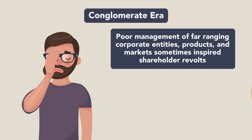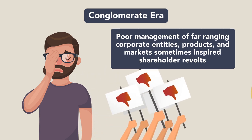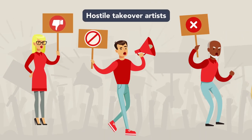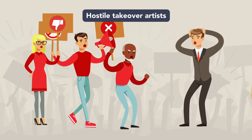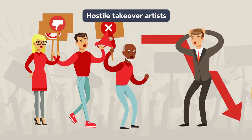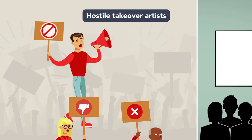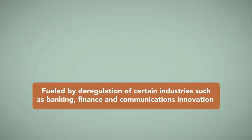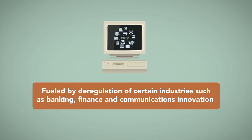The conglomerate era produced inefficiencies from heavy cost structures, resulting in a drag on corporate earnings. Poor management of far-ranging corporate entities, products, and markets sometimes inspired shareholder revolts. Enter the hostile takeover artists who rode the wave of the shareholder revolt by leading hostile takeover efforts against major targets whose stock had depreciated in value due to falling earnings. Individual corporate raiders, inspiring the fictionalized Gordon Gekko in the 1987 movie Wall Street, often led these takeover attempts. The 1990s saw a merger wave fueled by deregulation of certain industries such as banking, finance, and communications innovation via the pairing of computers and internet technology.